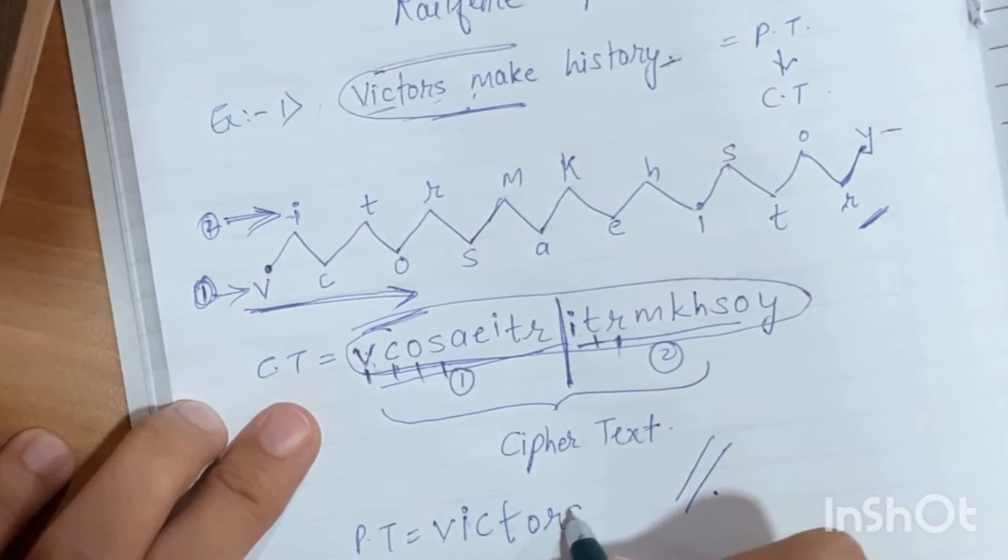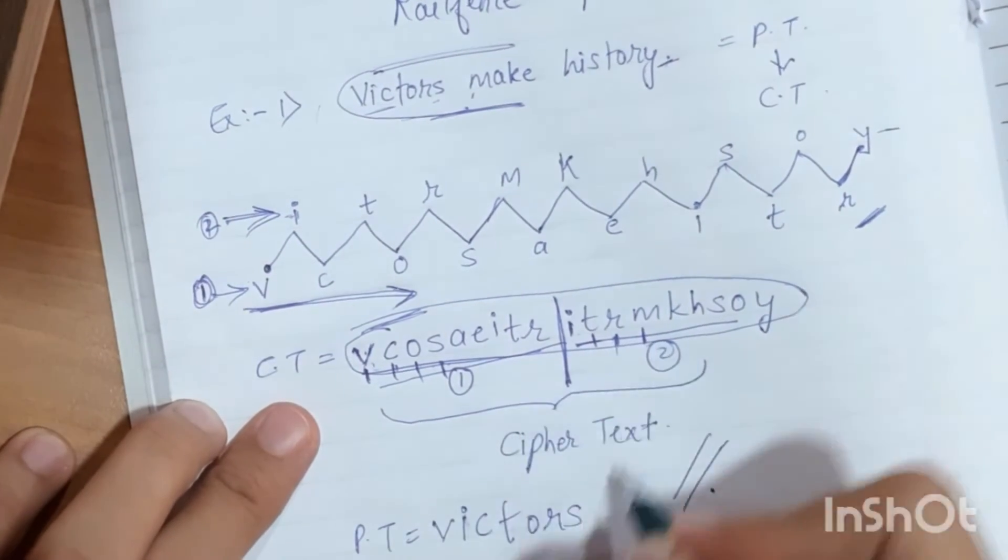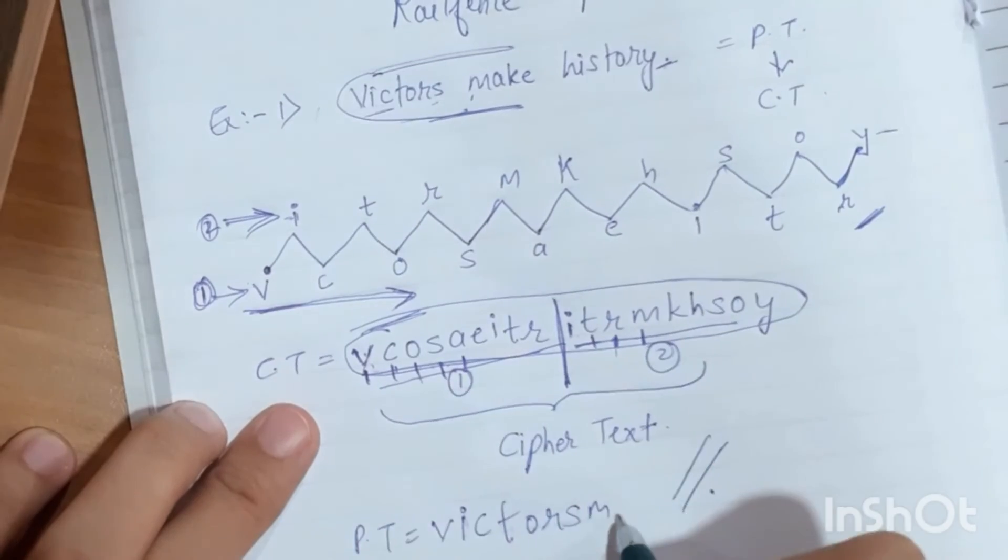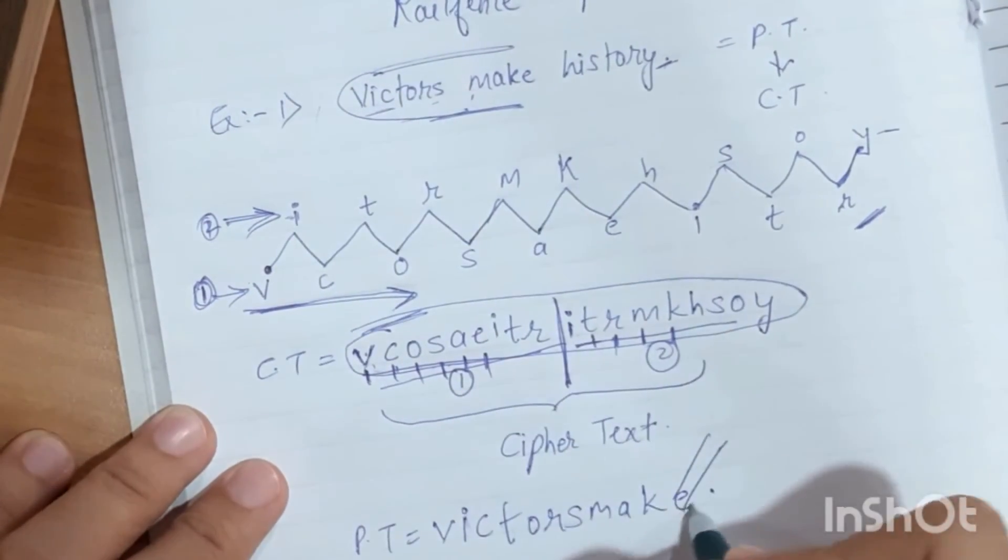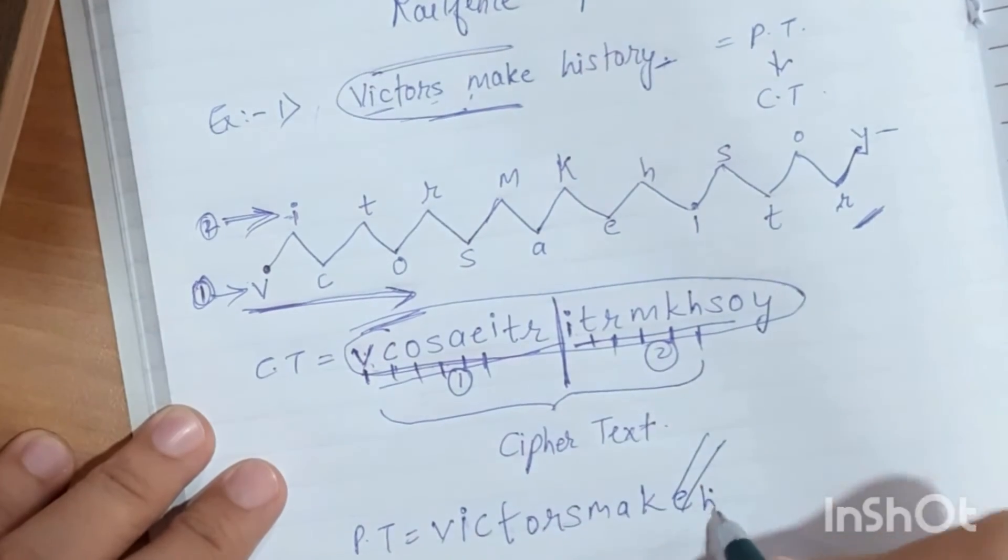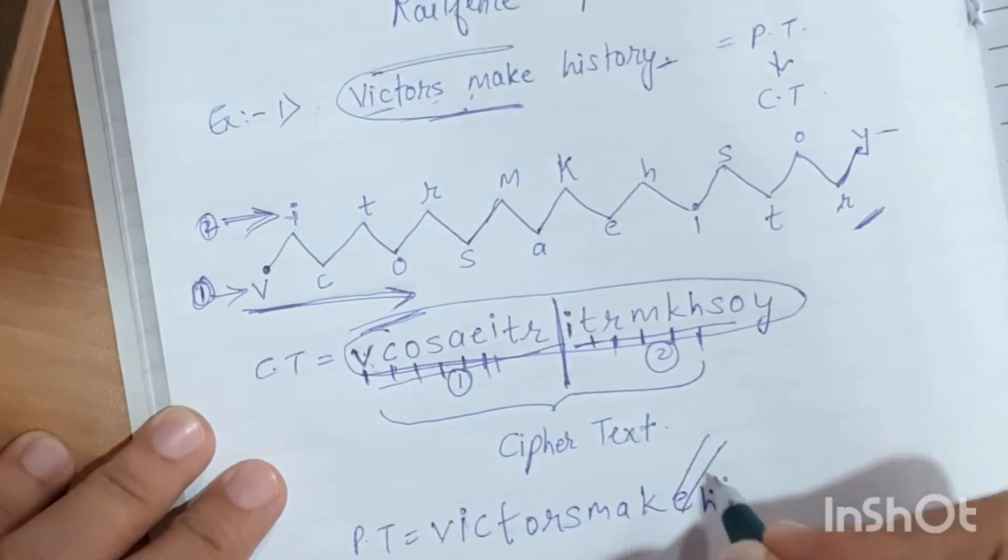So this is the first word complete: Victors. Then the second word: make. Then history: H, I, S.